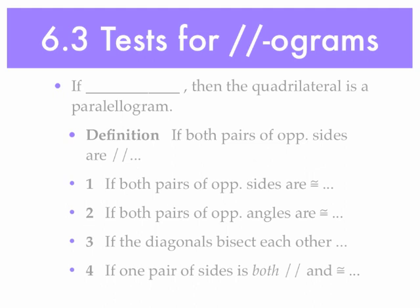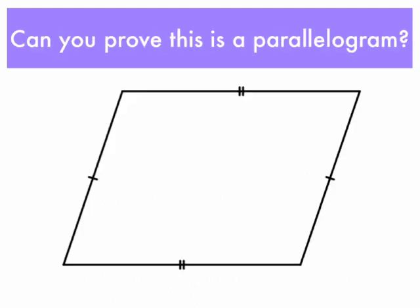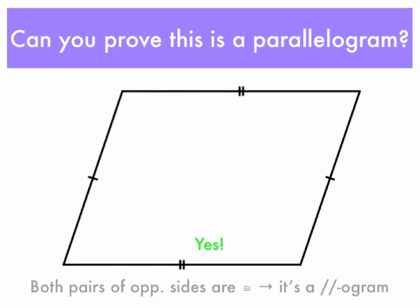Here are a couple of examples demonstrating that. Could you prove, using the previous tests, that this is a parallelogram? We know that opposite sides are congruent because of those tick marks. And since both pairs of opposite sides are congruent, that implies that this is a parallelogram.